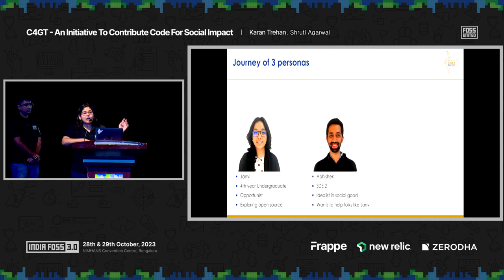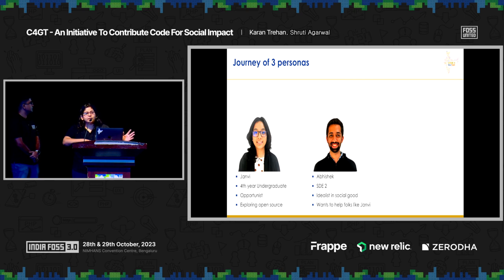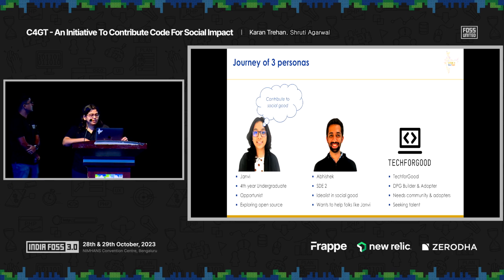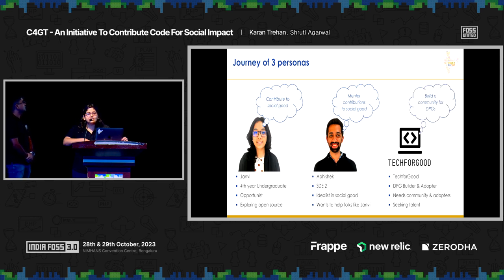The second persona is Abhishek, an SDE at an organization called Tech for Good. He is immensely interested in contributing to social goods, is brimming with innovative ideas, and wanted to mentor raw talent like Janhvi. The third persona is Tech for Good, a DPG builder and DPG adopter organization that wanted to build a community around their products. Janhvi is looking to contribute to social goods, Abhishek wants to mentor raw talent, and the organization is looking for an active community around their products.